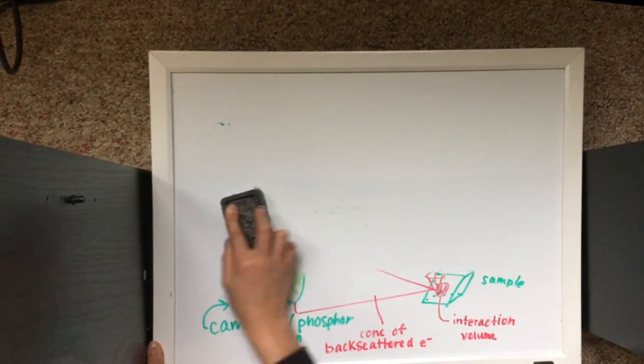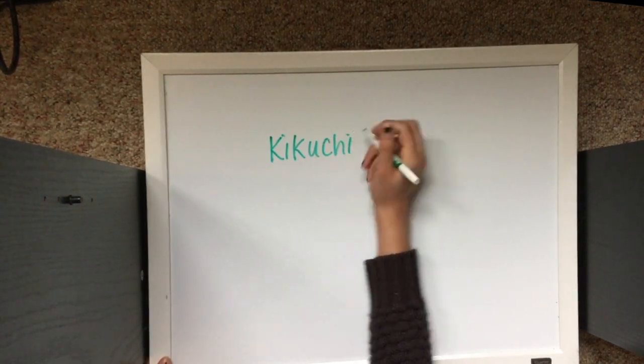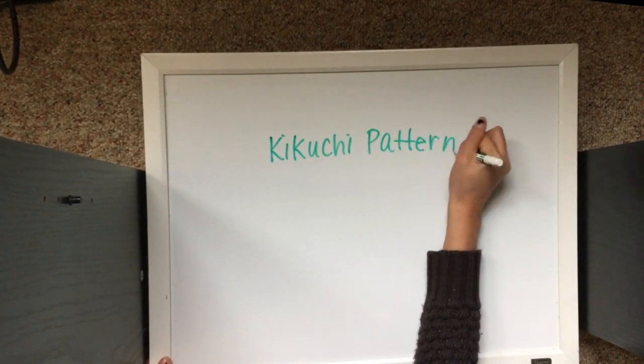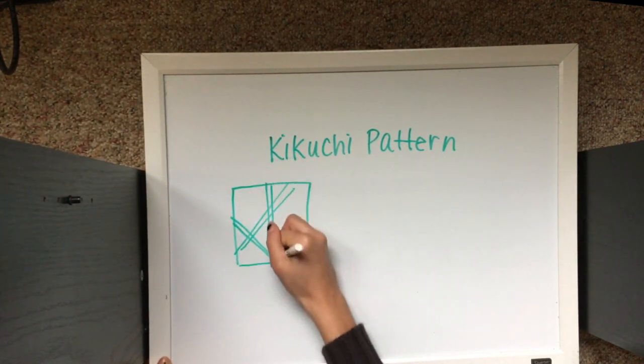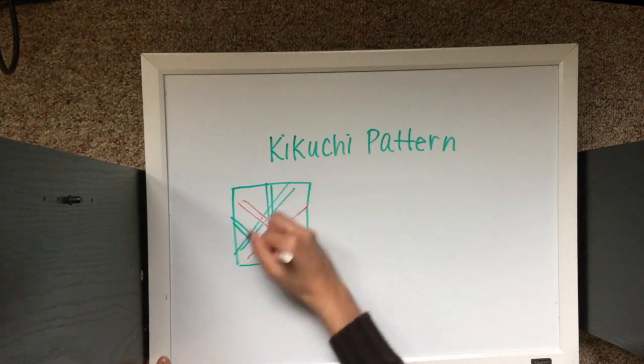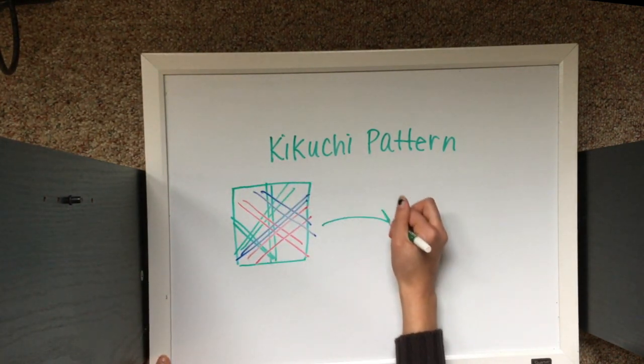To interpret the orientation of each grain from the Kikuchi pattern, a hue transform is taken of each Kikuchi band. Each pair of Kikuchi lines is transformed into single points whose location can be identified more accurately than pairs of lines. The width between each pair of bands, as well as the angle between each set of planes, is then calculated and compared to large databases of information to determine the planes.